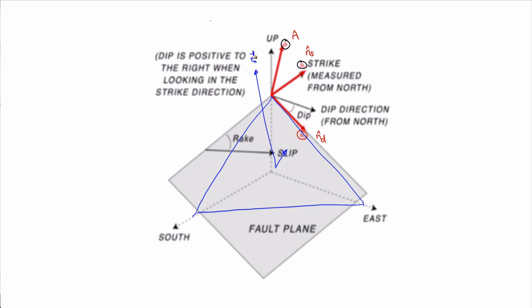Remember we also had an arbitrary traction on the face, and a normal vector. From that we derived the stress tensor essentially — we used that Cauchy tetrahedron, wrote all these equations. Given this little cube in equilibrium, given a traction and a normal, we ended up with an equation.